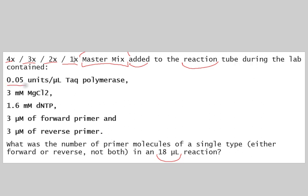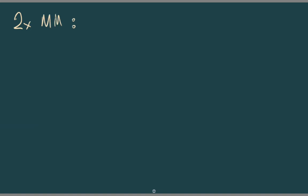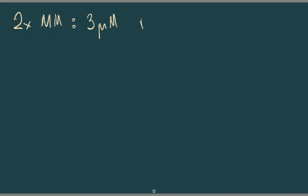We are also provided with the concentrations of other components, but the main point here is the forward and reverse primers. We need to find the number of primer molecules of a single type — either forward or reverse. We take the forward primer; we don't need the reverse, dNTPs, salt, or Taq polymerase. So the concentration is 3 micromolar, which is the concentration for the forward primer in the 2x master mix.